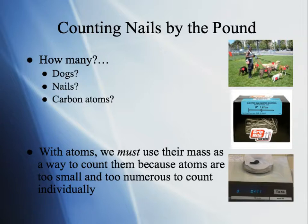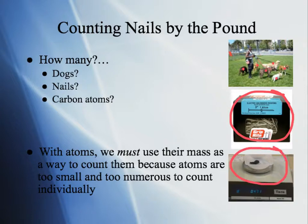How many nails are in this box? A little harder to figure out. If you open it up, you could probably count how many nails are in it — it might take you a few minutes, but it's possible. Now, what about this carbon in a little dish — how many atoms are on that dish? That is a bit harder to figure out, because we can't see those carbon atoms like we see the dogs. Atoms are super, super tiny.